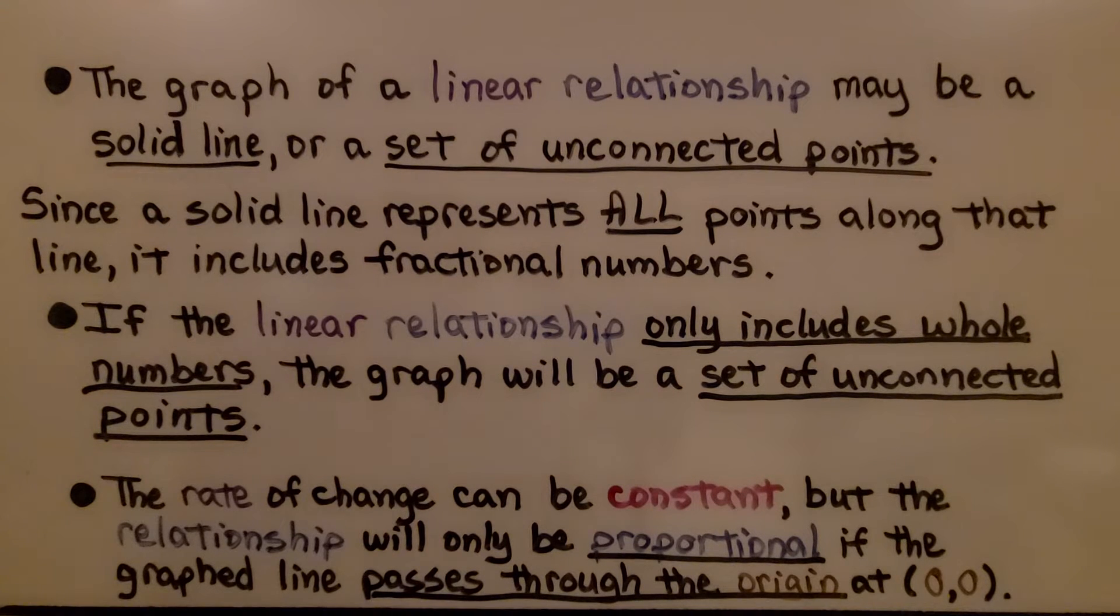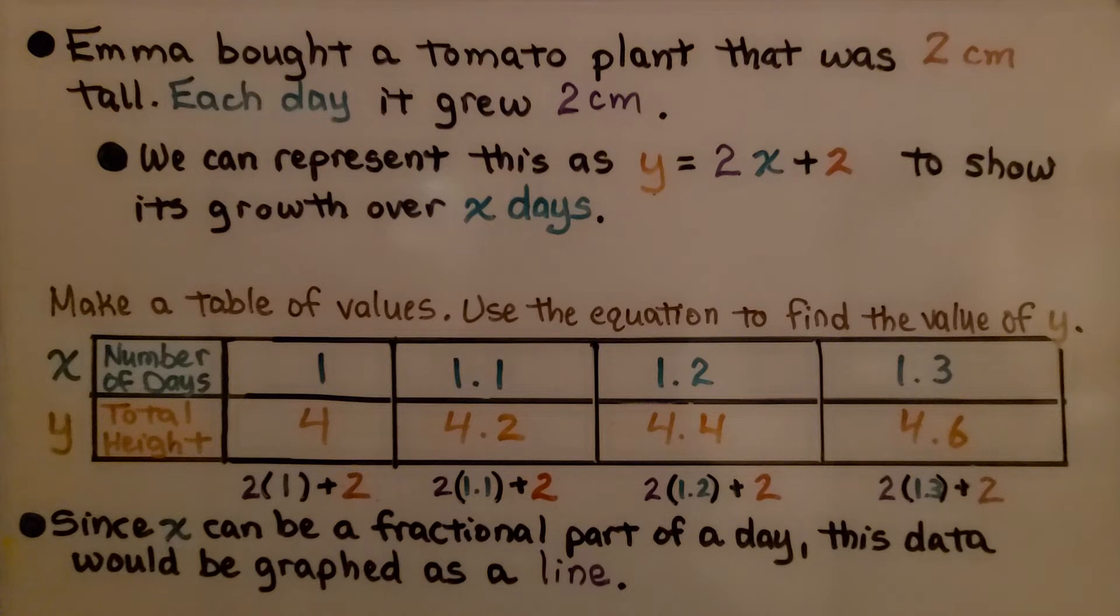We can have a linear relationship but it may not be a proportional relationship. In the last video, I used a similar problem to this. Emma bought a tomato plant that was 2 centimeters tall. Each day it grew 2 centimeters. We can represent this as y = 2x + 2 to show its growth over x days. We make a table of values and use the equation to find the value of y.